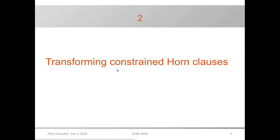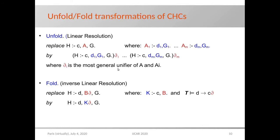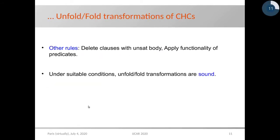For transforming constraint horn clauses we follow a very general approach based on unfold-fold transformation rules. The unfold rule is just linear resolution: we select an atom A in the body of a clause and replace the clause by the set of its resolvents with respect to A. The fold rule is a kind of inverse of unfold: we replace the conjunction Bθ in the body of a clause, which is an instance of the body of another clause, by the instance Kθ of the head of that latter clause. Other transformation rules include deletion of clauses with unsatisfiable body and rewriting based on functionality of some predicates.